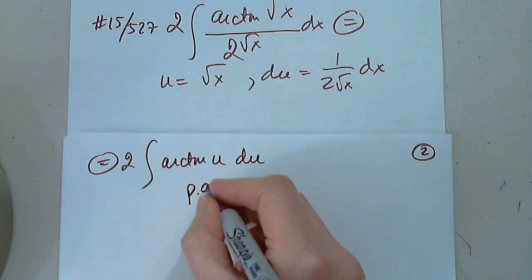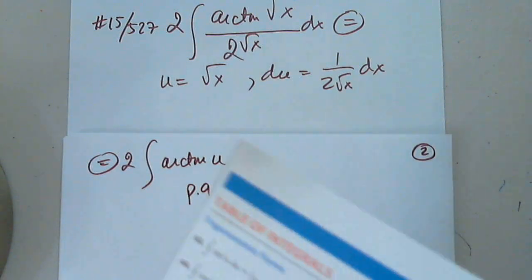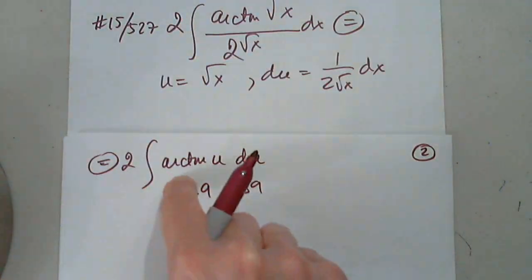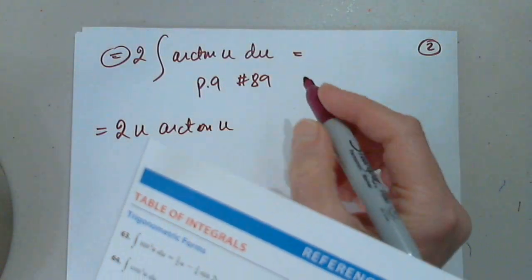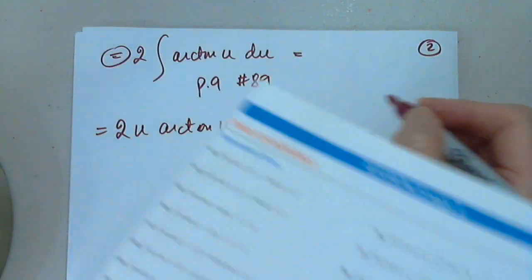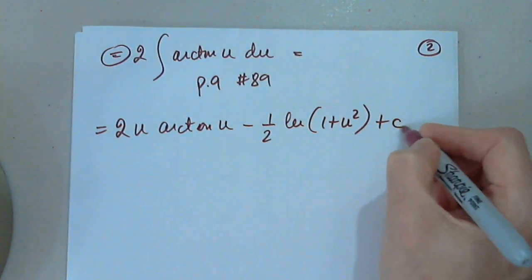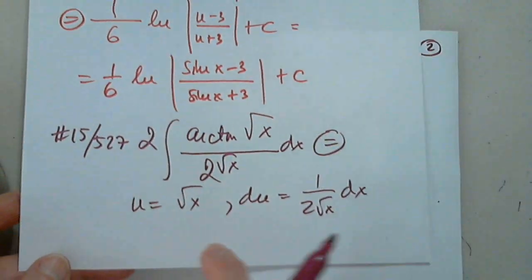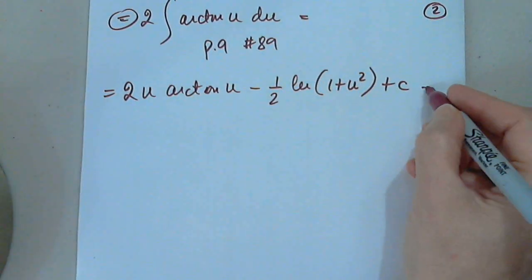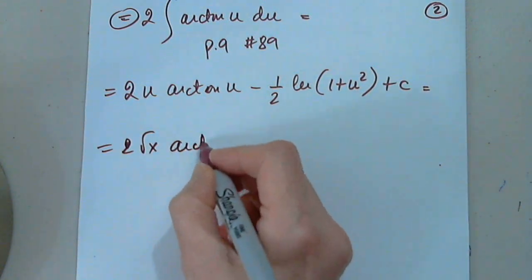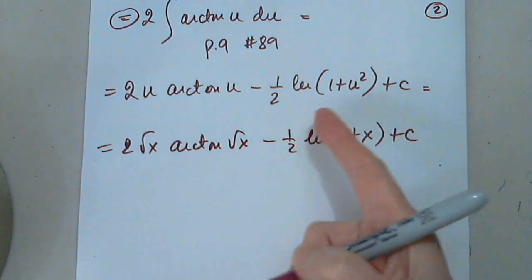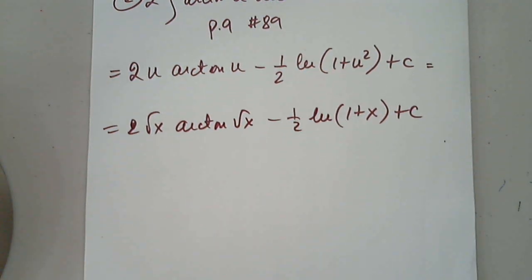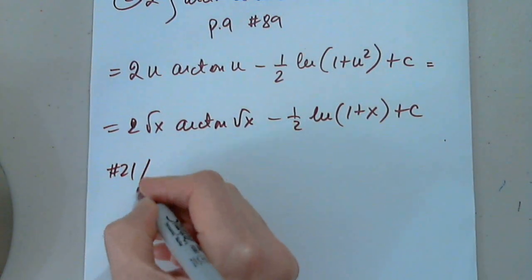On page 9 of the reference, we have formula number 89: the integral of arctan(u) du. With the 2 outside, the result is 2 times [u·arctan(u) − (1/2) ln(1 + u²)] + C. Replacing u with √x, the final answer is 2√x · arctan(√x) − (1/2) ln(1 + x) + C, since (√x)² = x.